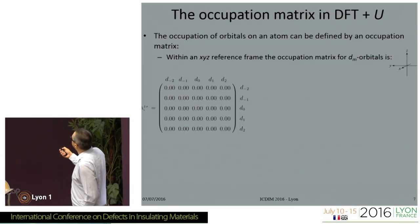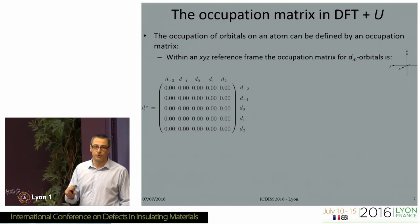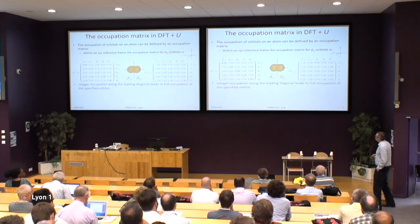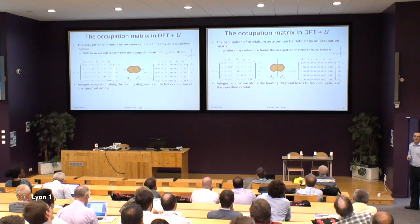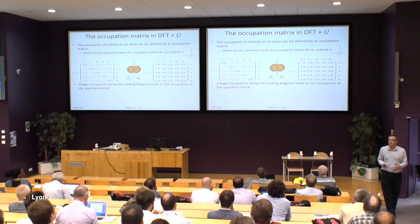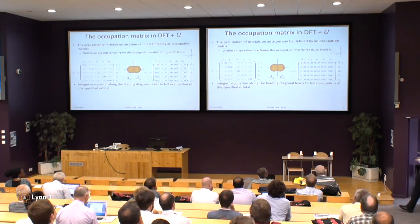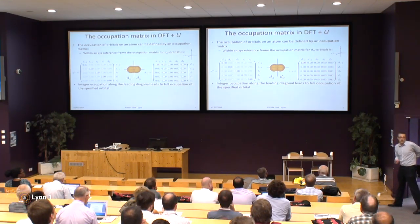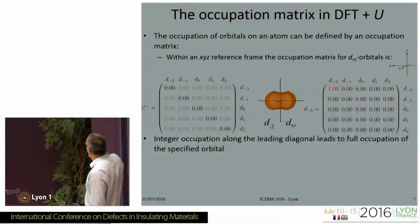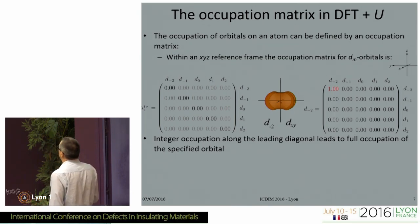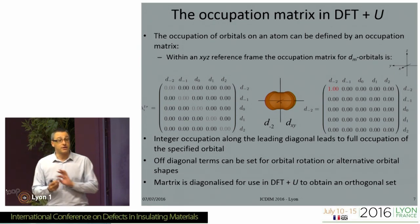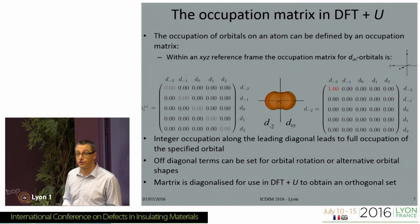We've been looking at using Occupation Matrix Control within DFT+U to allow you to actually choose how electrons — and indeed holes — are positioned. The occupation matrix for D-orbitals is a 5×5 matrix, because the matrix is set up in the Cartesian reference frame, so it's not necessarily coherent with your crystal field and therefore your orbitals are not directly orthogonal. But if you apply a 1 to the leading diagonal, then you get a nicely localized orbital. Off-diagonal terms allow you to rotate those orbitals, and it is the diagonalization of this matrix that is used as the occupations within the DFT+U approach.